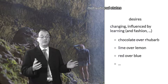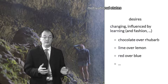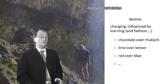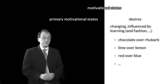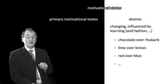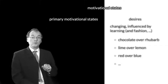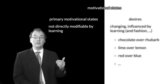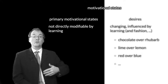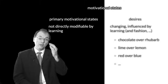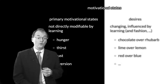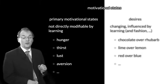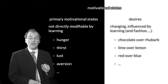So at the moment the fashion might be to drive around in a red car; next year it could be that blue cars are more fashionable. On the other hand there are what are sometimes called primary motivational states — states which are not directly modifiable by learning or fashion. These are things such as hunger, thirst, lust, aversion, and the rest.